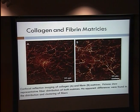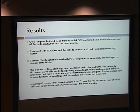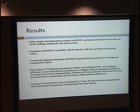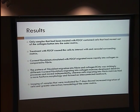Here are pictures of the plain matrices — collagen on the left and fibrin on the right — and you can't tell much difference; the fibrils look about the same. We found that only samples treated with PDGF had cells that moved out of the inner button, as expected; the others were negative controls. PDGF also caused cells to interact and remodel, pulling on the surrounding matrix. Unexpectedly, corneal fibroblasts stimulated with PDGF migrated more rapidly into collagen compared to fibrin, and the pattern of migration was very different.